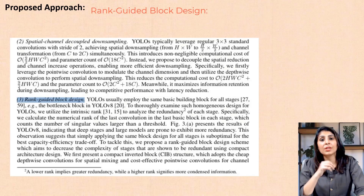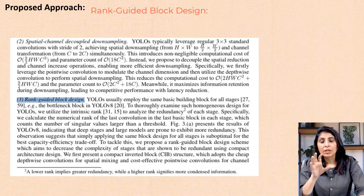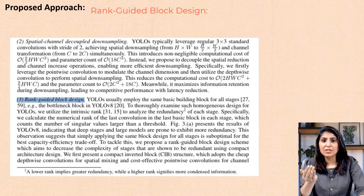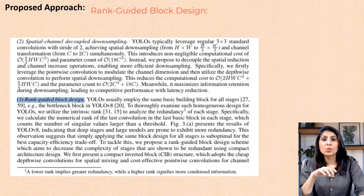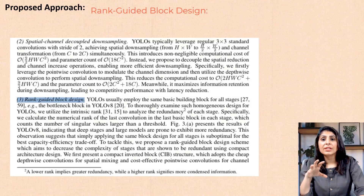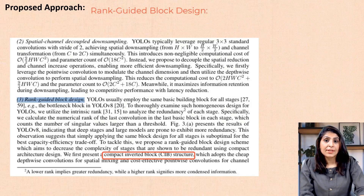To solve this problem of repetitiveness, the authors came up with a new way of building stages of the model. They looked at each stage, checked how much unnecessary information it contained, and if a stage had a lot of unnecessary information, they used a new kind of building block that's better at eliminating this redundancy. They call it the compact inverted block, or CIB.